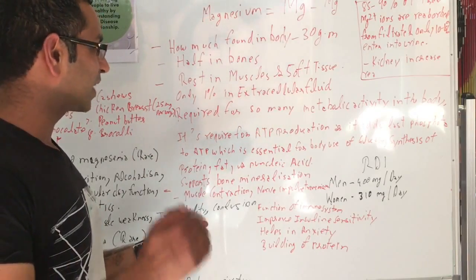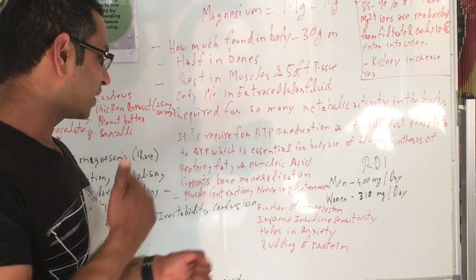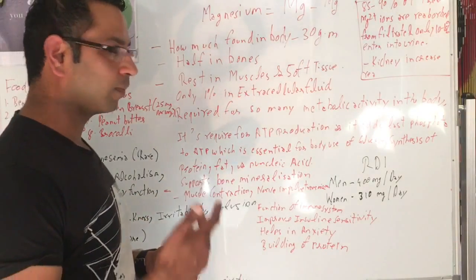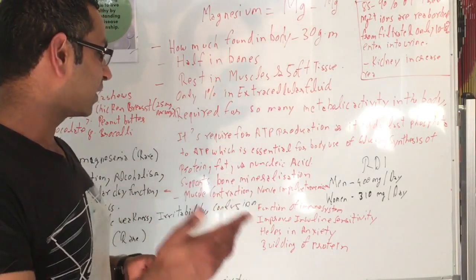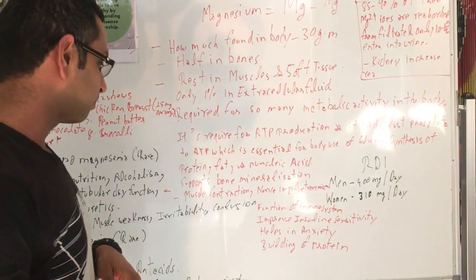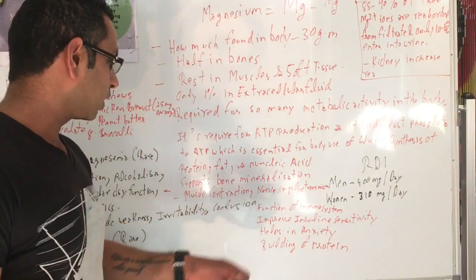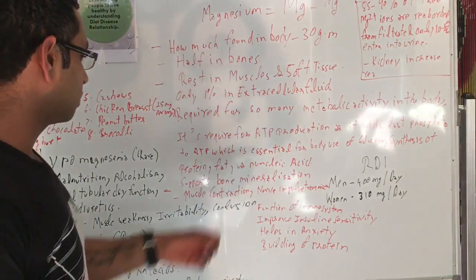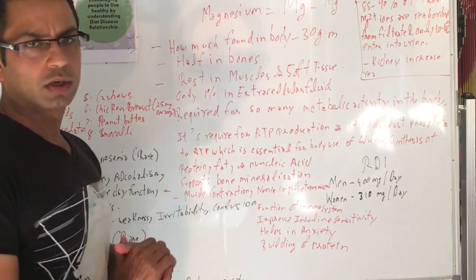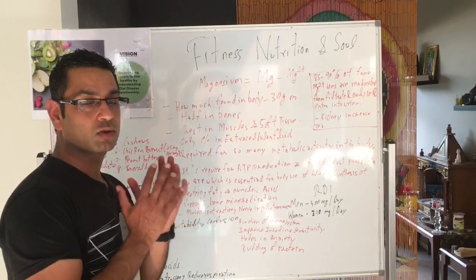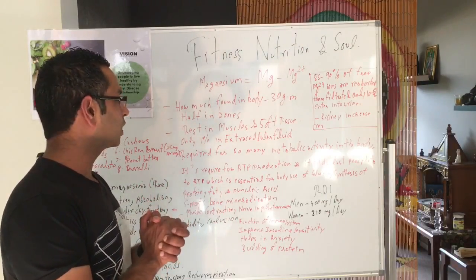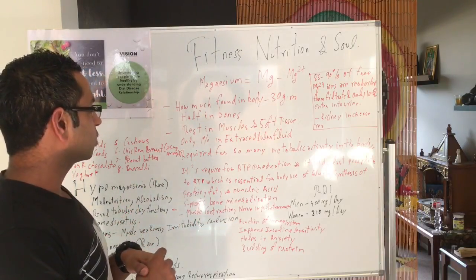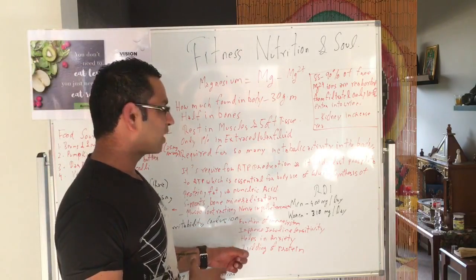If they are deficient in magnesium and they improve their magnesium either from supplements or food, they can improve insulin sensitivity up to 15%. It helps with anxiety and helps build up protein, which I mentioned before. So in short, magnesium is very important for so many different things in the body. But only 1% is found in the extracellular fluid, so that's why deficiency of magnesium is very...